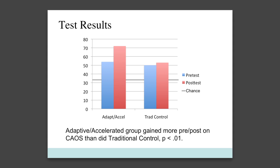However, in the traditional course, students only increased by three points, and that was after they had been spending 15 weeks studying the same material. So, as you can see, students in the online adaptive course had greater learning gains while spending about half as much time.